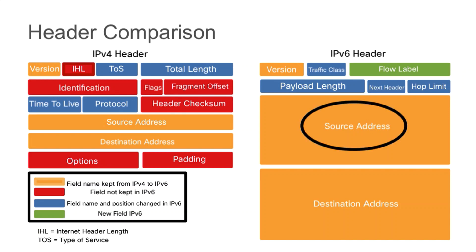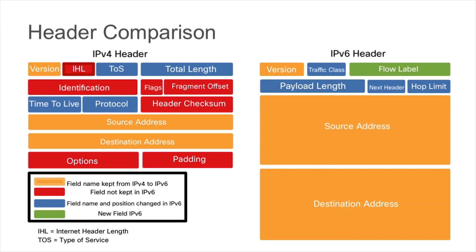We still have source and destination address fields, but they are much larger in IPv6 — 128-bit addresses versus 32-bit in IPv4. That gives us 256 bits total of addressing between source and destination. There are also no options or padding fields; the header is fixed in its structure.